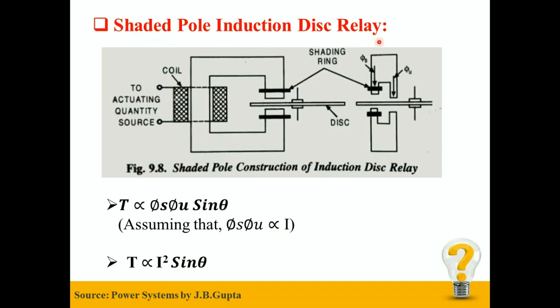Shaded Pole Induction Disc Relay: the shaded pole structure is usually actuated by current flowing in a single winding on a magnetic structure containing an air gap. The air gap flux produced is split into two fluxes that are displaced in time and space by shading rings, generally made up of copper, that encircles part of the pole phase on each pole.